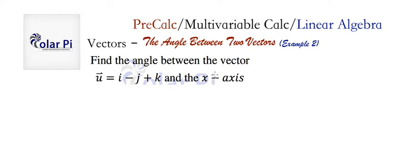We could just pick a random vector along the x-axis, because the length of a vector is not going to determine the angle between the two vectors. This vector we pick along the x-axis could be as long as we want, and that wouldn't affect the angle between the x-axis and this vector u.